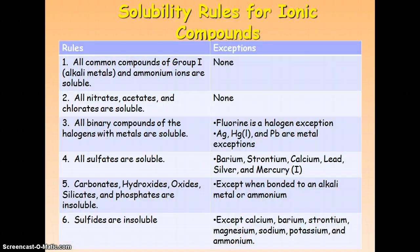There are certain solubility rules that you need to start getting familiar with for ionic compounds. You will especially need these during our reaction unit. There are six rules and then a couple exceptions for some of the rules. First rule: all common compounds in group 1, which would be your alkali metals, and ammonium ions are soluble, and there are no exceptions to this rule. So if it's got an alkali metal or an ammonium ion attached to it, it's soluble.